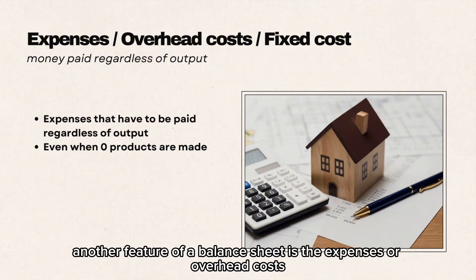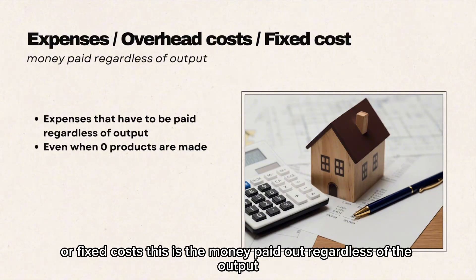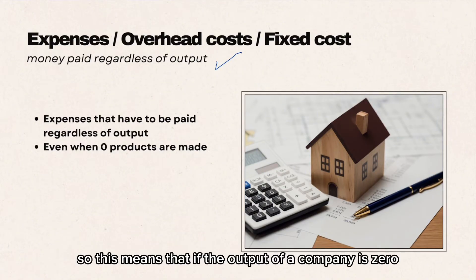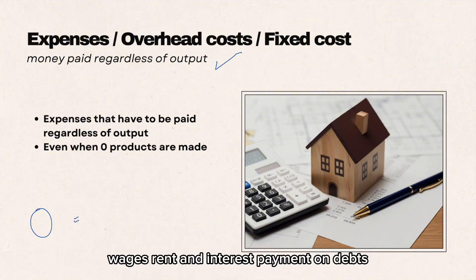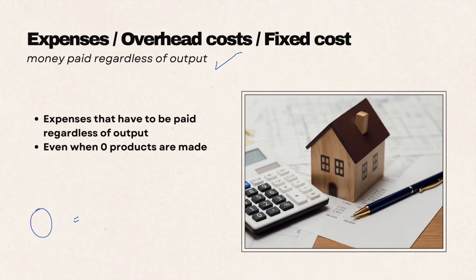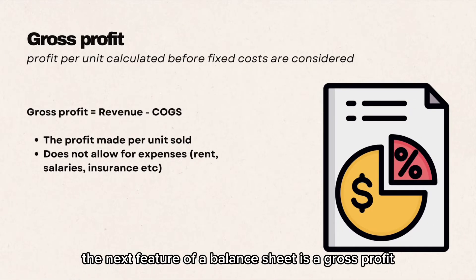Another feature of an income statement is expenses, also called overhead costs or fixed costs — this is the money paid out regardless of output. Even if a company produces nothing, these expenses still have to be paid. These include insurance, wages, rent, and interest payments on debt.